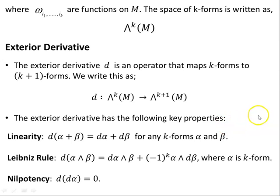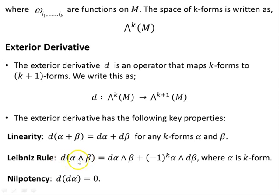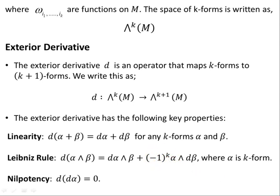The exterior derivative has the following key properties. Linearity: the exterior derivative acting on the sum of two K forms alpha and beta equals D alpha plus D beta. The Leibniz rule or product rule: D acting on the wedge product of two forms alpha and beta equals D alpha wedge beta plus negative one to the K, alpha wedge D beta, where alpha is a K form. Nilpotency: D D alpha is zero. The minus one comes from the anti-symmetry property.